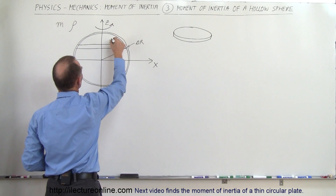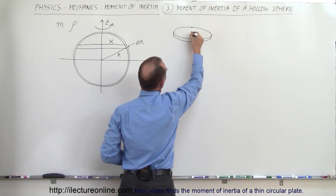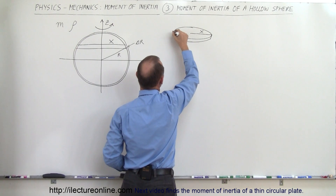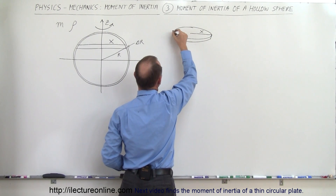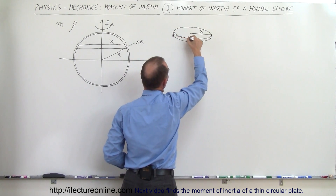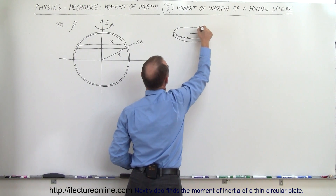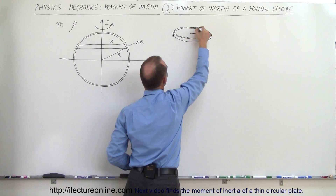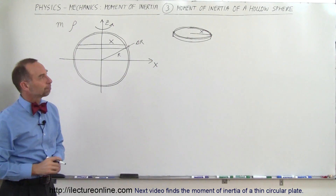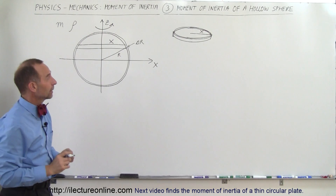The radius of that washer will be x — the distance from the center to the outside. There will be a small thickness to it as well, so it will actually have a tiny amount of volume and a small amount of mass. What would be the volume of that ring?